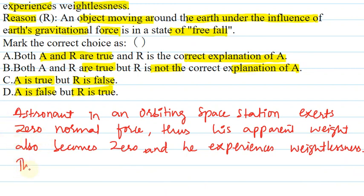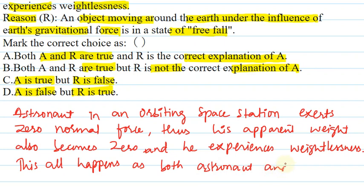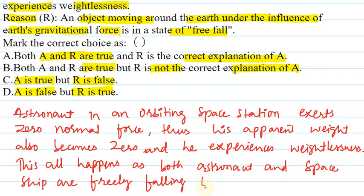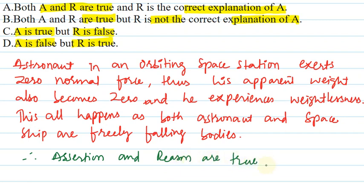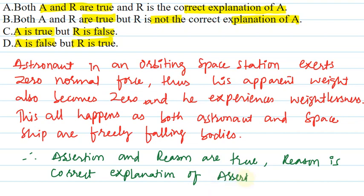This all happens because both the astronaut and the spaceship are freely falling bodies. Therefore, we can conclude that both assertion and reason are true, and reason is the correct explanation of assertion.